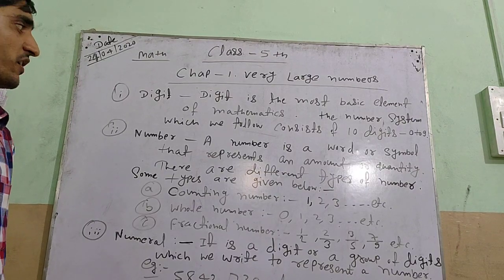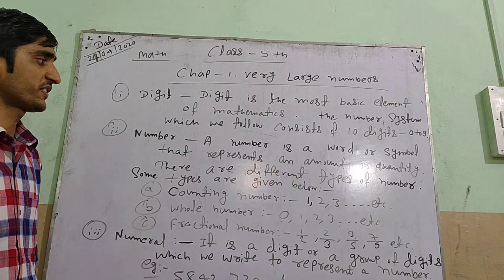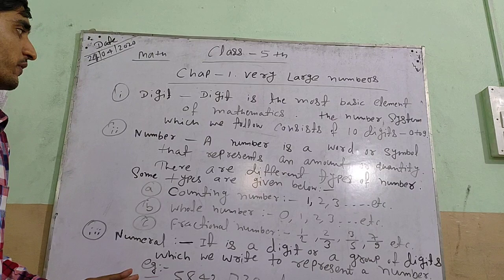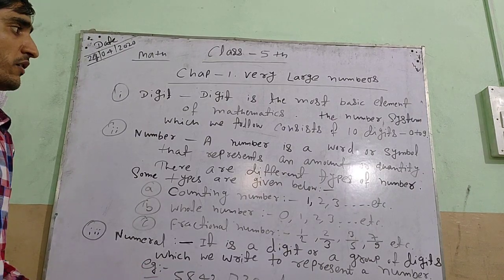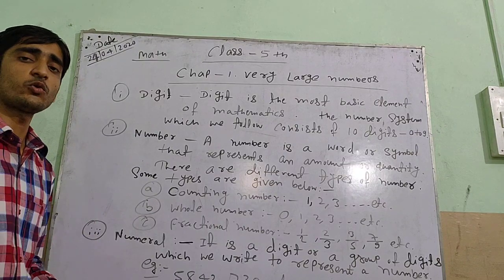Second is number. Number is a word or symbol that refers to any amount or quantity. There are different types of numbers.